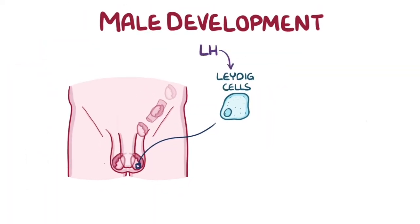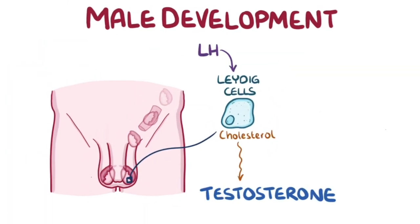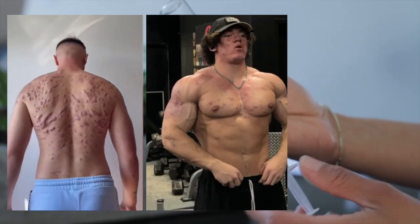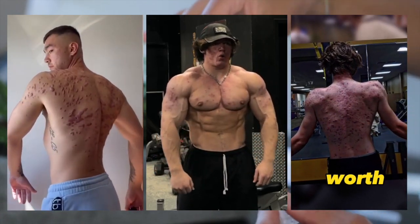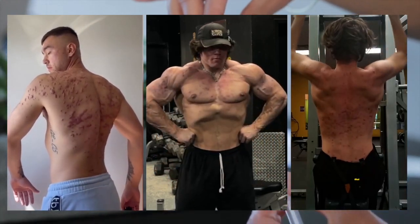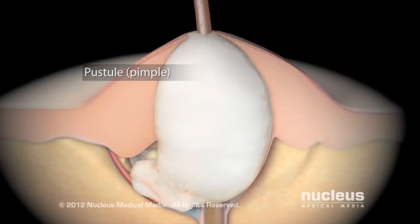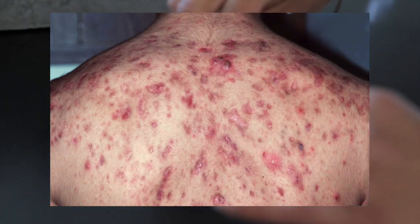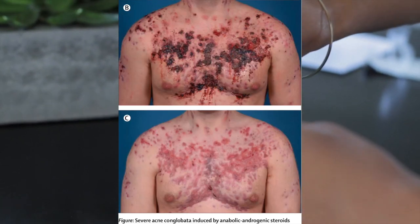This explains why acne typically flares during puberty, when testosterone production naturally increases. It is therefore no surprise that steroid users with free testosterone levels up to 10 times higher than natural lifters can develop the most severe forms of acne. These are medically referred to as acne fulminans and acne conglobata, and are characterised by interconnecting comedones, causing disfiguring cysts, inflammatory nodules, and deep, burrowing abscesses.